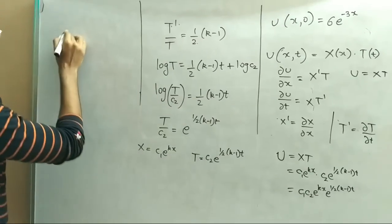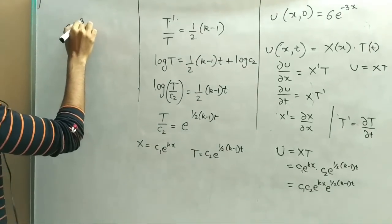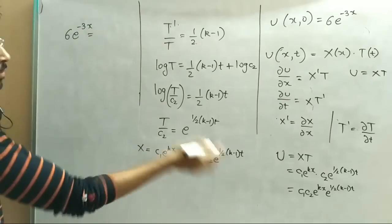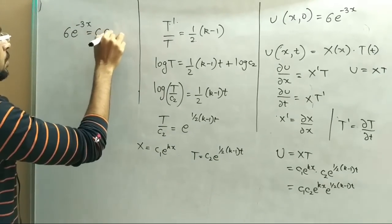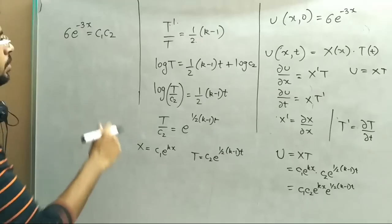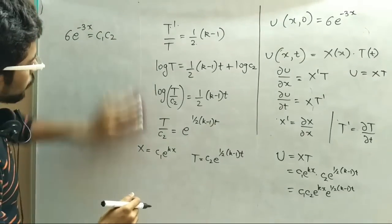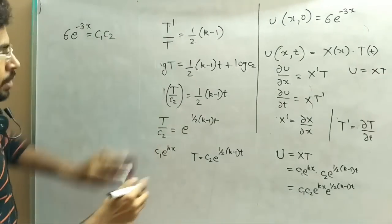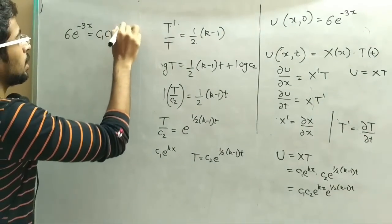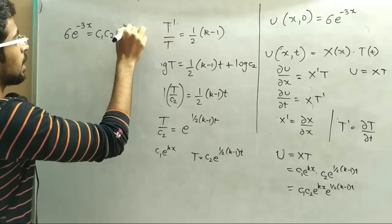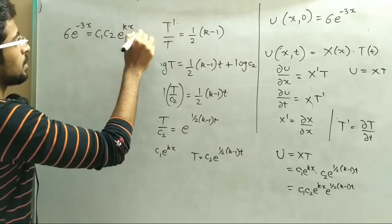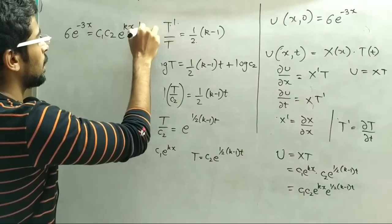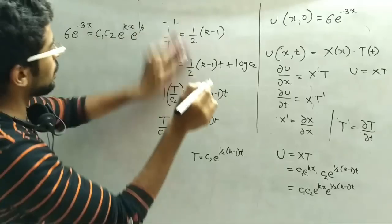Jab hum compare karenge, then we get: 6 e raised to minus 3x equals to c1 into c2 times e raised to kx times e raised to one half (k minus 1) times zero.